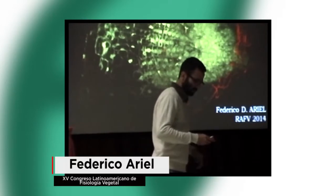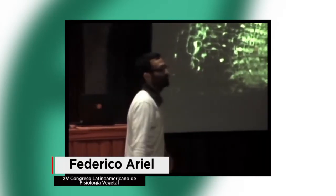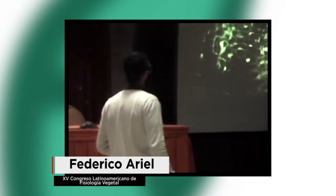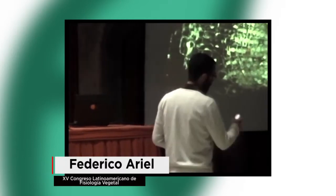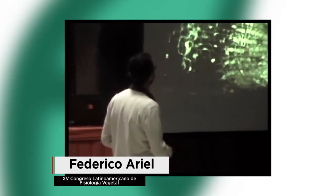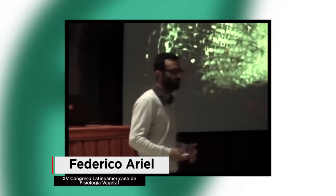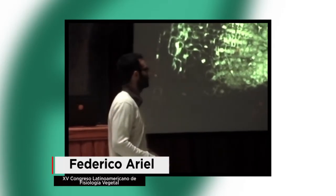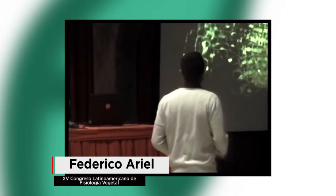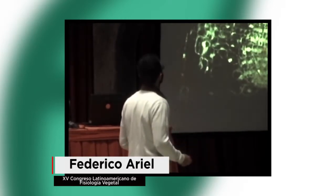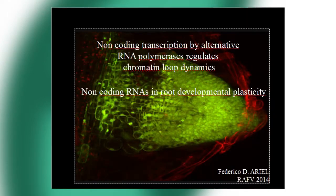Now I will start with my talk. Martin is a very good speaker, he's very funny, so I will do my best to keep you awake. The title of his talk was 'Non-Coding RNAs in Root Developmental Plasticity.' He was planning to talk about my project and another one in our group. I will focus on my project. My own title is 'Non-Coding Transcription by Alternative RNA Polymerases Regulate Chromatin Loop Dynamics,' and this has an effect on root development and plasticity.